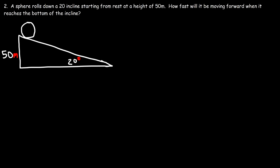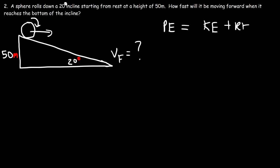Number 2: a sphere rolls down a 20 degree incline starting from rest at a height of 50 meters. How fast will it be moving when it reaches the bottom of the incline? The best way to do this is to use conservation of energy. The sphere currently has potential energy, which is going to be converted to translational kinetic energy because the sphere is moving forward, but also some of the energy is going to go into rotational kinetic energy.